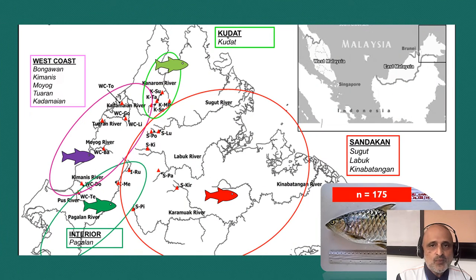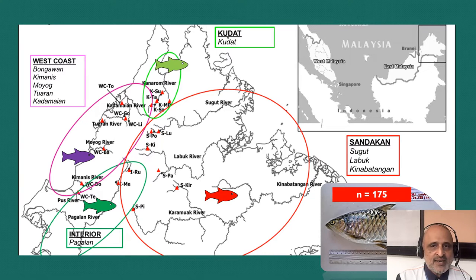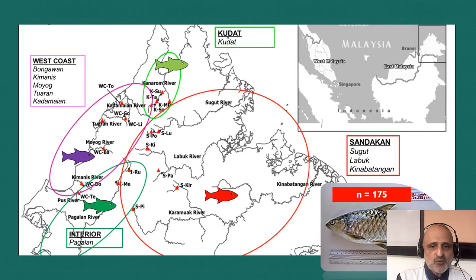Within Sabah, there is a clear demarcation of the topography in terms of the riverine ecosystems. This topography is divided based on the Trusmadi and the Crocker ranges. Looking at the overall population, we can identify four distinct populations based on the riparian river basin: the West Coast, Interior, Sandakan, and Kudat populations.